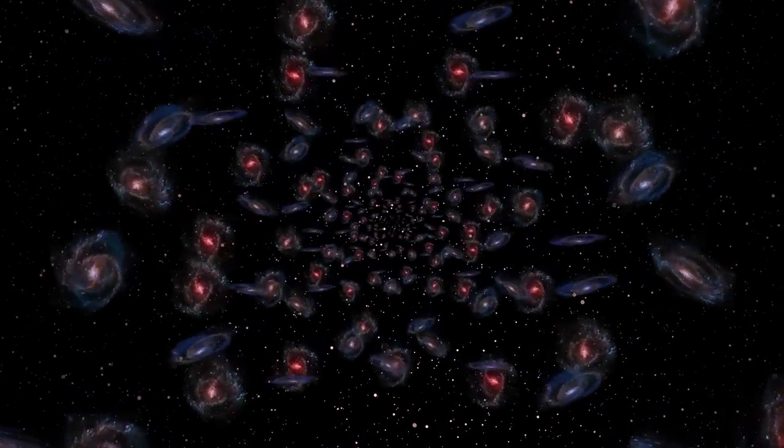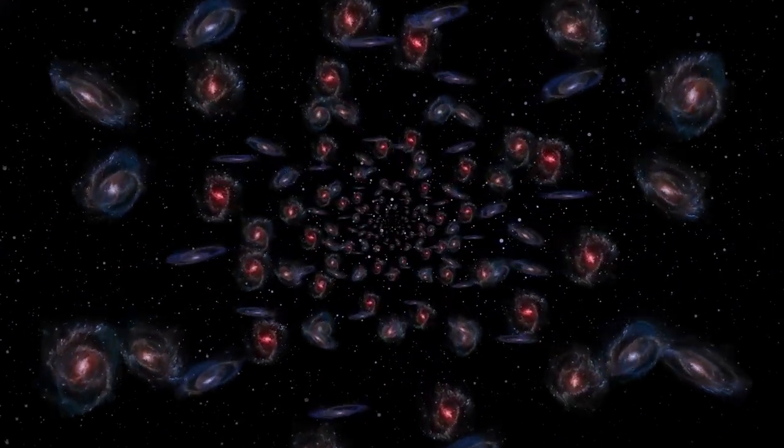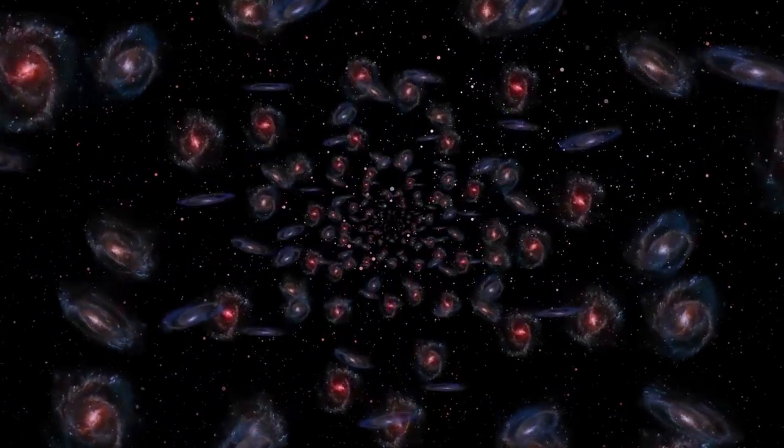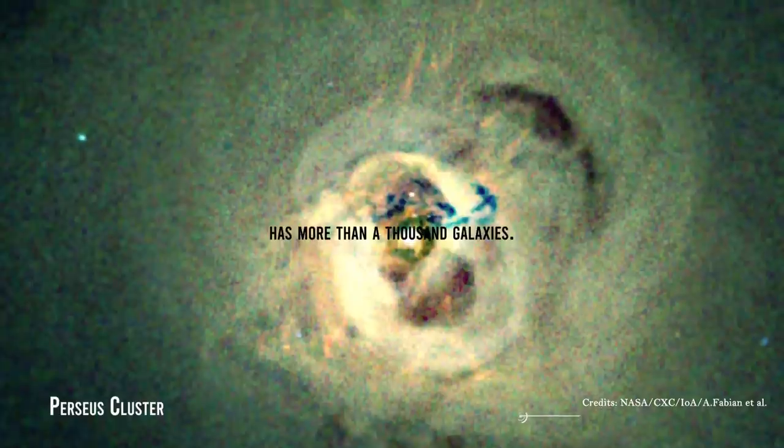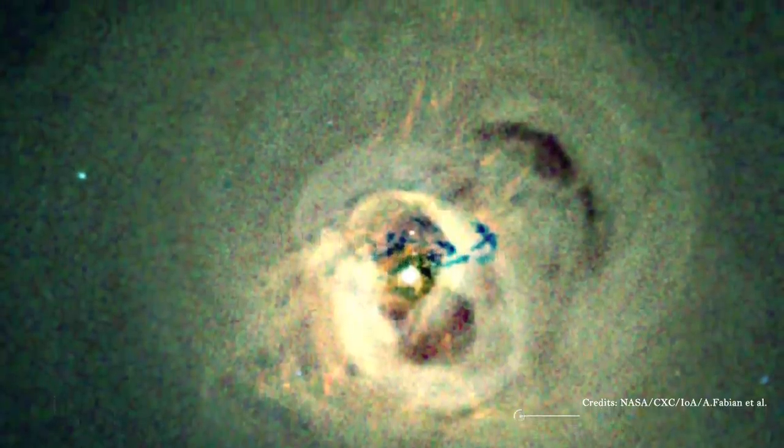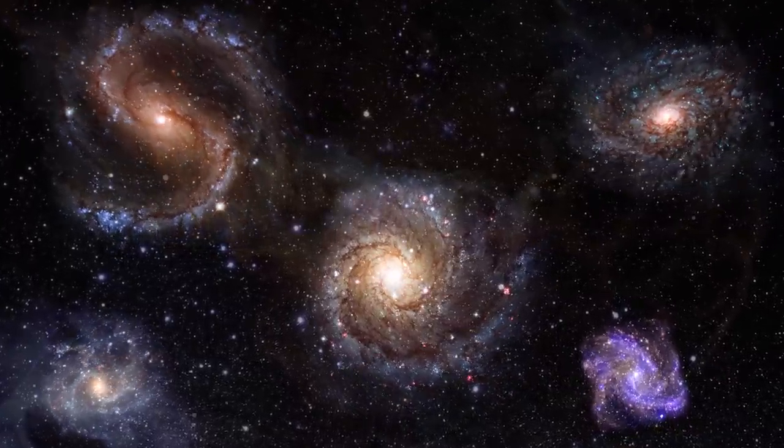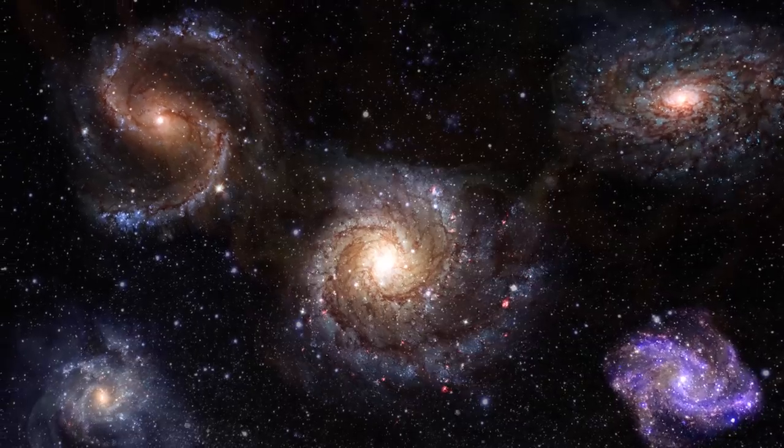Galaxy clusters are the largest objects in the universe that are held together by their own gravity. They contain hundreds of thousands of galaxies, lots of hot plasma, and a large amount of invisible dark matter. The Perseus cluster, for example, has more than a thousand galaxies and is one of the most luminous sources of X-rays in the sky. Galaxy clusters are home to the biggest galaxies in the known universe and provide us with information about the structure of the universe on the largest scales.